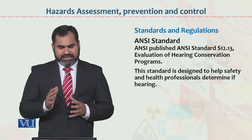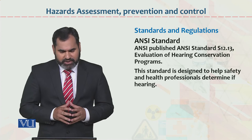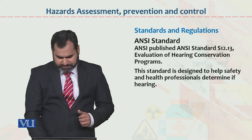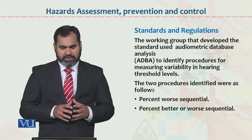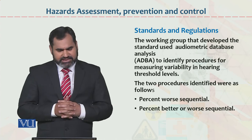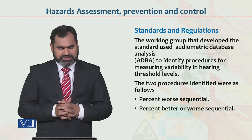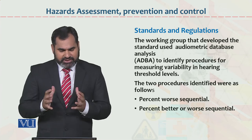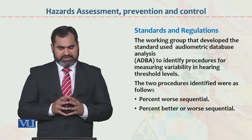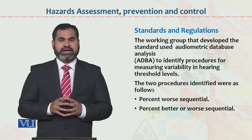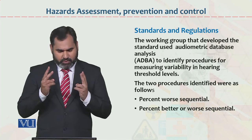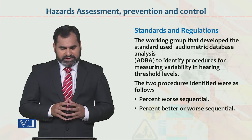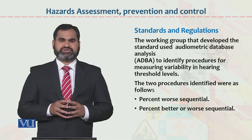ANSI standard S12.13 specifically hearing conservation ko deal karta hai. The working group that develops this standard used audiometric database analysis to identify procedures for measuring variability in hearing threshold levels, and they identified two things: number one, percent worse sequential; number two, percent better or worse sequential.